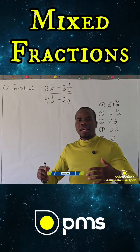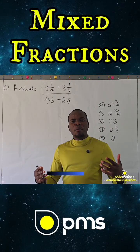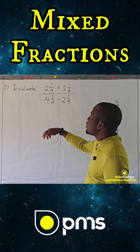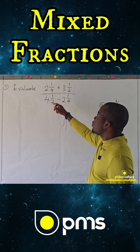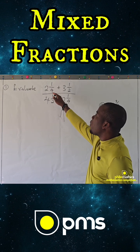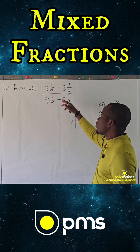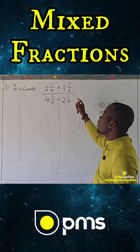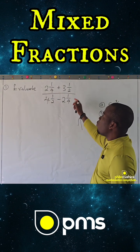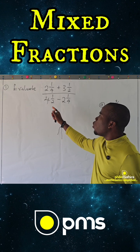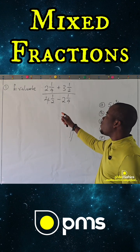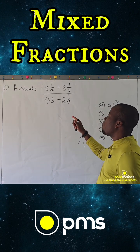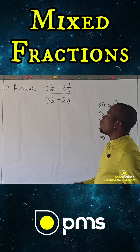The first question is a problem on fractions. Evaluate: two and one quarter, plus three and one half, everything over four and one half, minus two and one quarter.